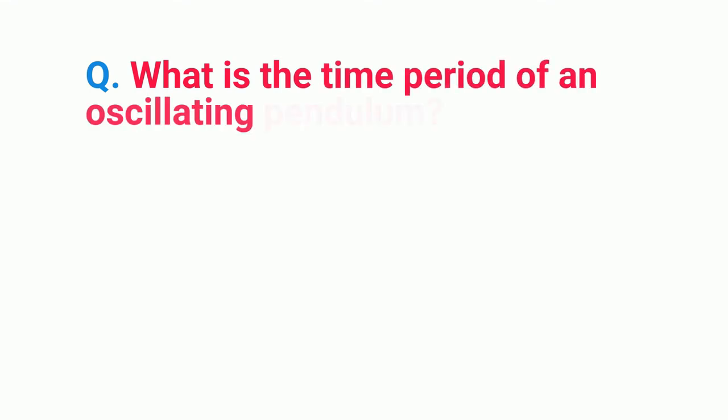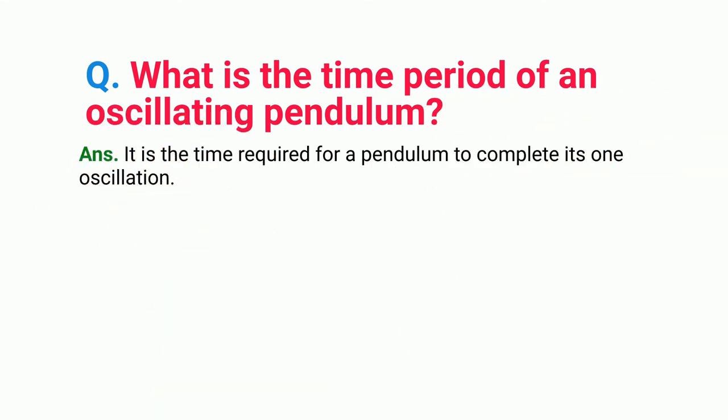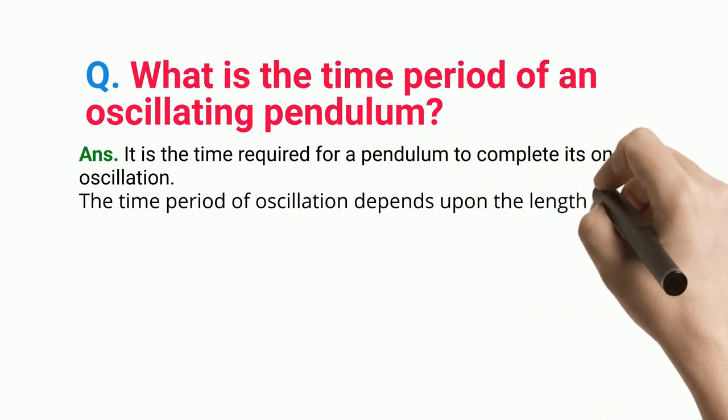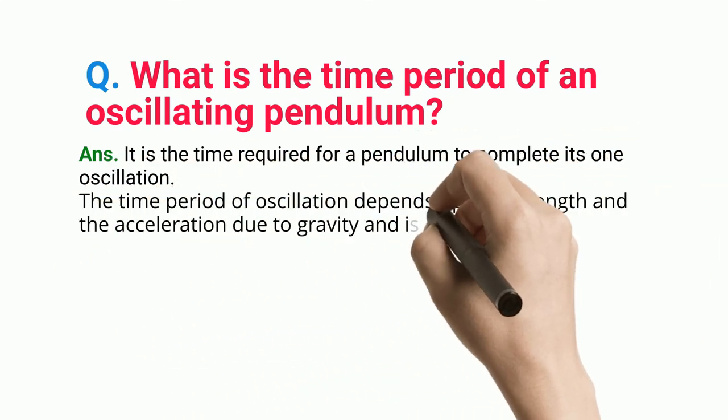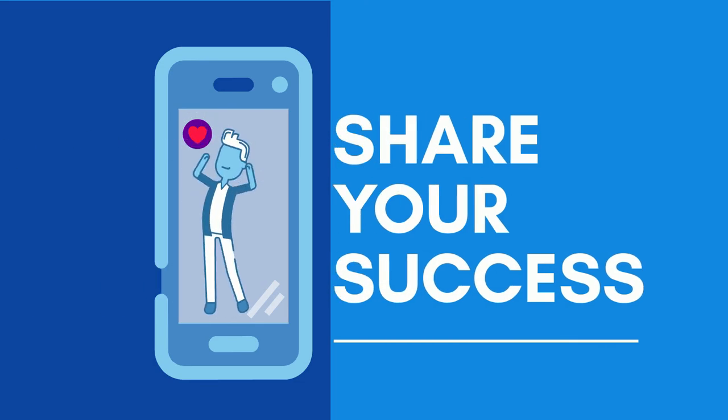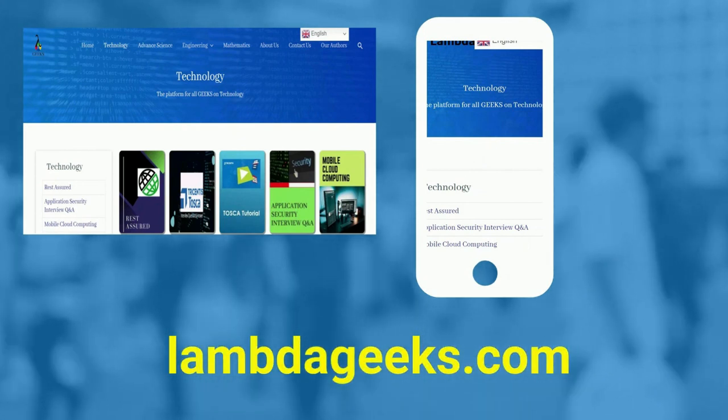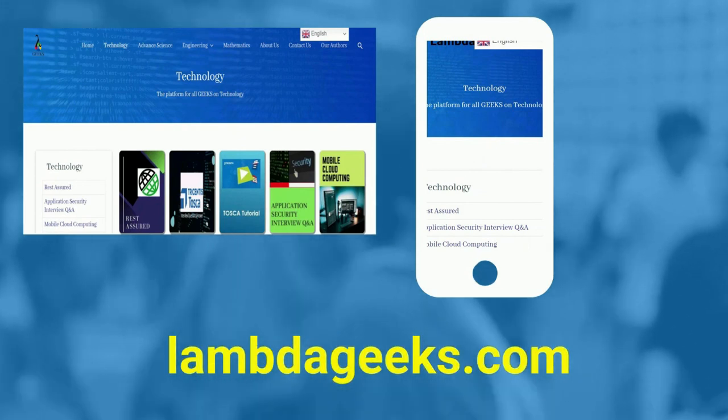What is the time period of an oscillating pendulum? The time period of oscillation depends upon the length and the acceleration due to gravity and is given by the formula as T = 2π√(L/g). Please visit our website lambdageeks.com for more articles on technology, engineering, mathematics, and various other domains.